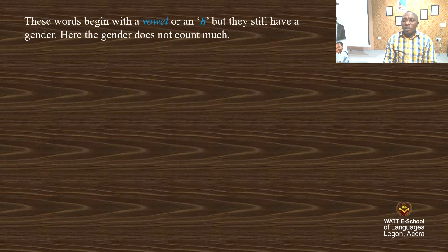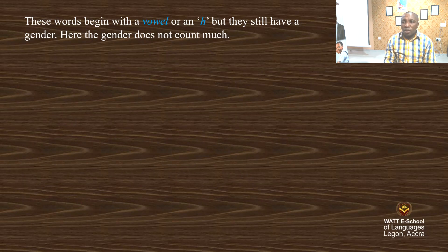These words begin with a vowel or an H, but they still have a gender. Here, the gender does not count much — only the beginning of the word counts. So when using l'apostrophe, only check the beginning of the word. If the word begins with a vowel in singular form, use l'apostrophe.